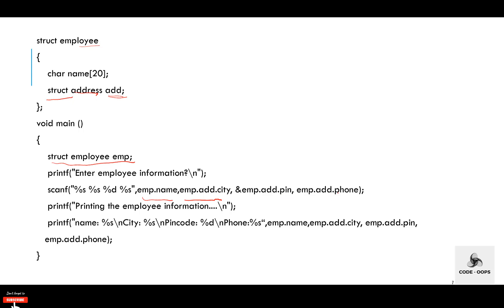Then after that, with the printf function, display the detail of the employee onto the screen. With the help of the dot operator, we can access the data members of a structure. By default, all the data members of a structure are public.